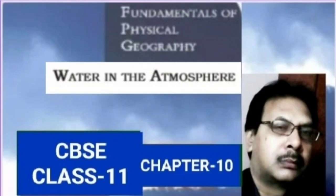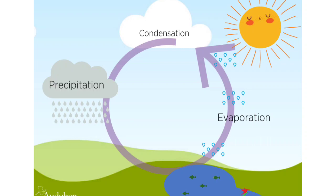In this topic, I am going to talk about rainfall and the different types of rainfall. When the air in the atmosphere becomes saturated, the excess water in the atmosphere starts falling to the earth's surface in the form of water droplets, which is called rainfall.